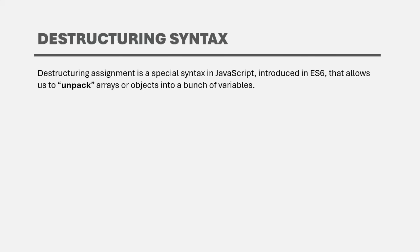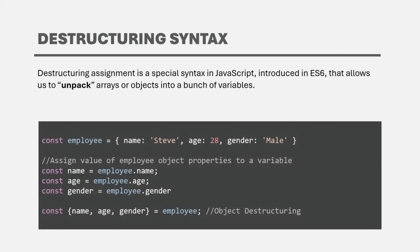Let's learn how we can destructure an object and where we can use destructuring syntax on an object. Let's say I have an employee object with a name property, age property, and gender property. If I want to create some variables and assign the name, age, and gender of the employee to them, without destructuring syntax, I would create variables and access each property from that object using dot notation, then assign that value to the variable.